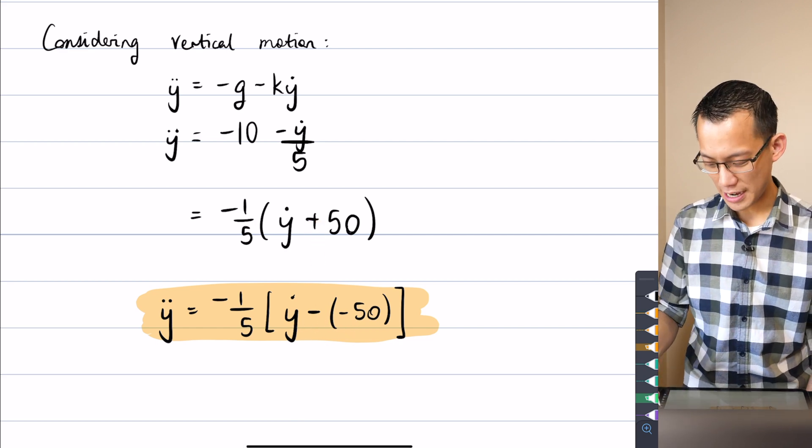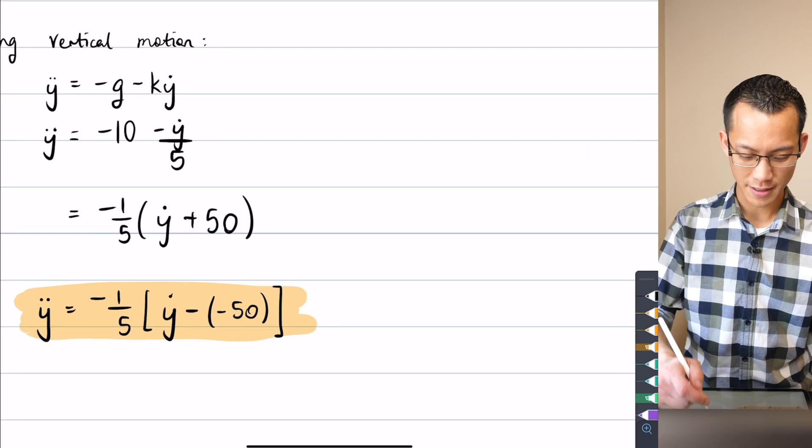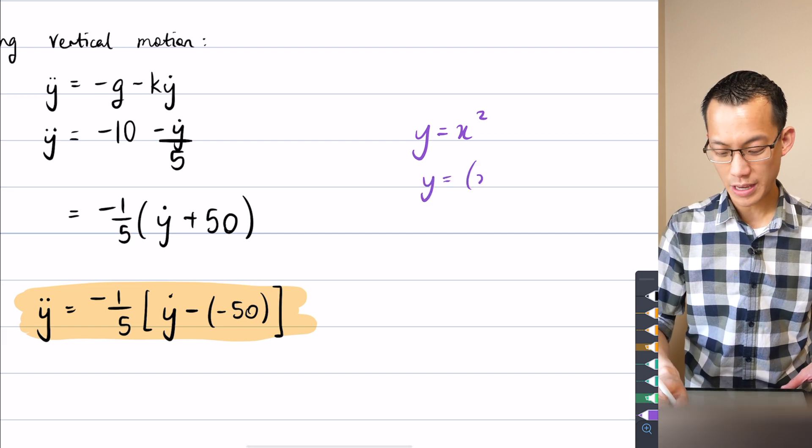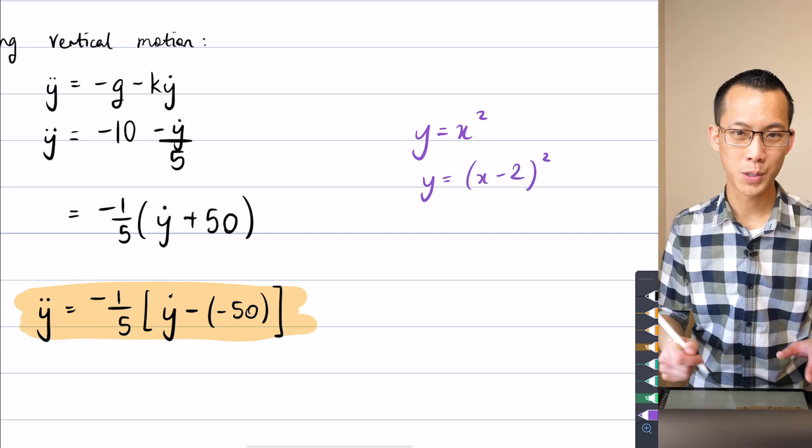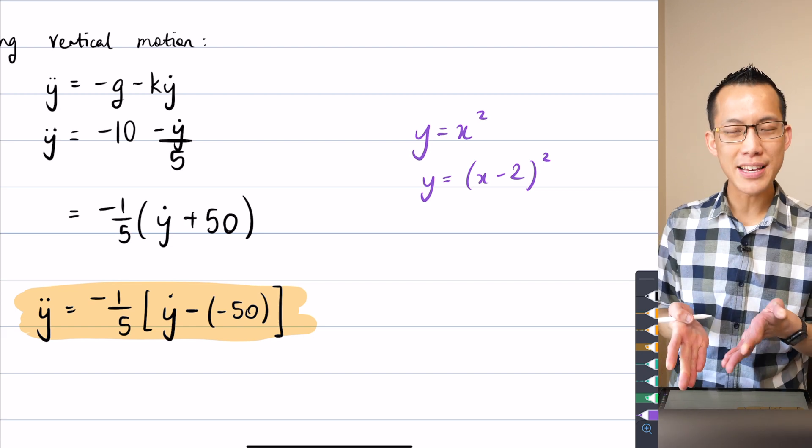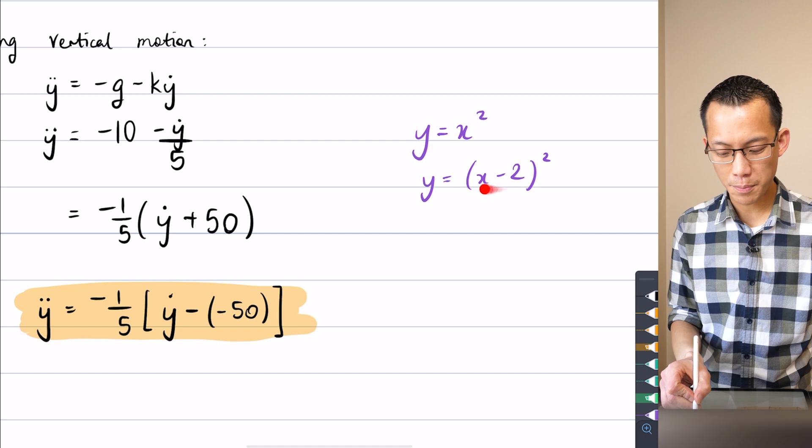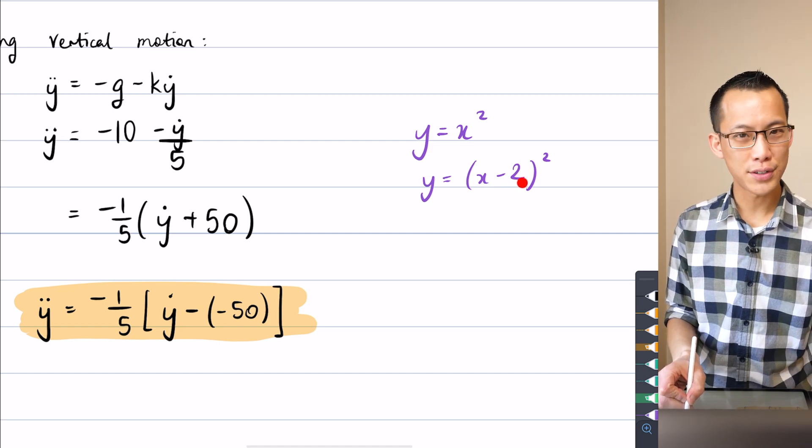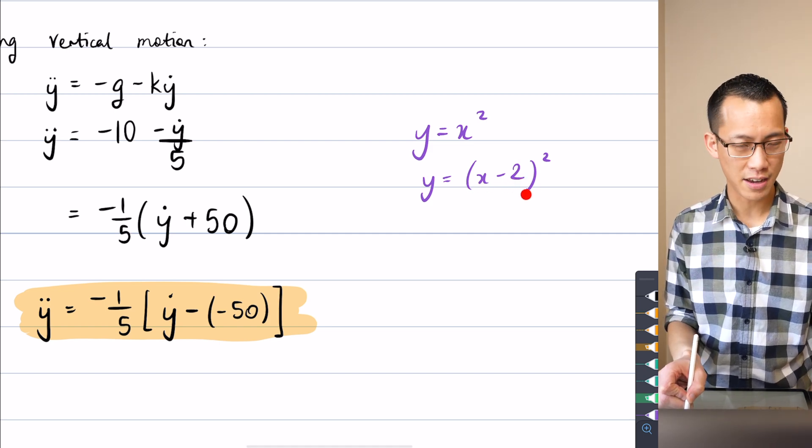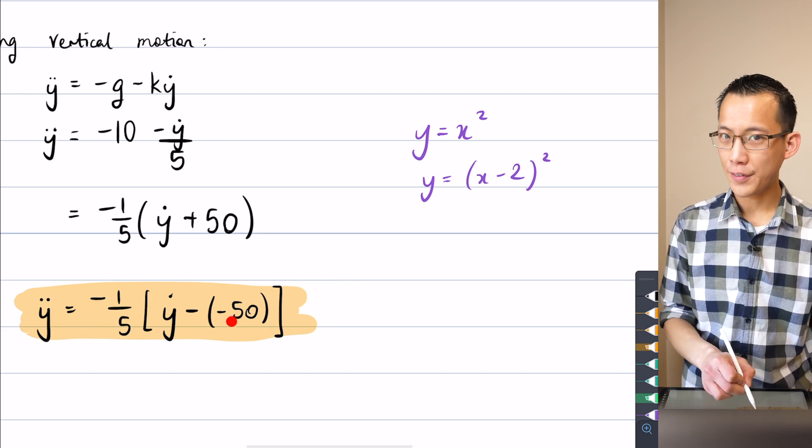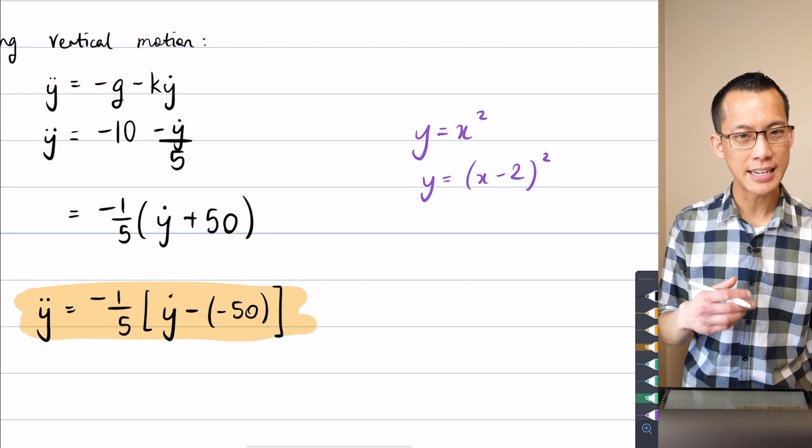If you were to consider, let's pop it over the other side here, the difference between y equals x squared and y equals x minus 2 all squared. This is a graph shift, the kind that Angad has identified. In this case, it would be a horizontal shift of two units because it's attached to the x. Over here, I'm having a shift of negative 50 and I've put that negative 50 in there to indicate the direction.